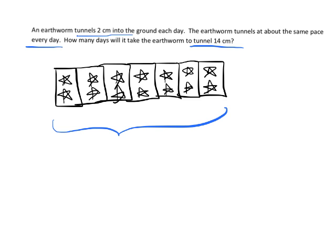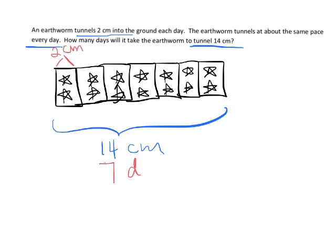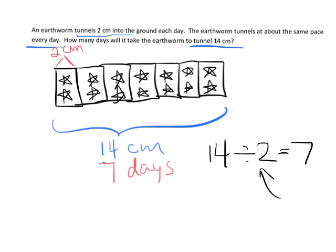Now, how would we label a tape diagram for this? We'd write 14 centimeters as the total, 2 centimeters per day as the size of each group, and 7 days as the number of groups. The equation is 14 divided by 2 equals 7, where 2 represents the size of each group.